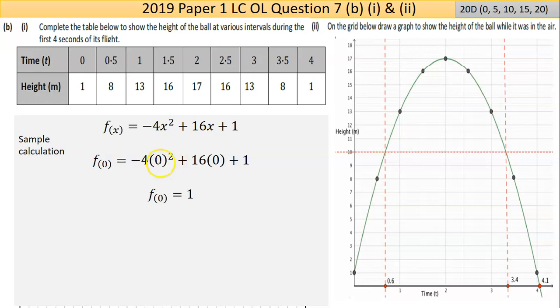I've done the same thing for all the other values of T and got the equivalent heights. Now I've just shown one calculation, and as long as you show the calculation, you're going to be in a pretty good place, and then fill in the table.